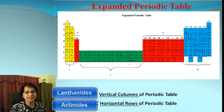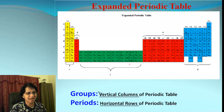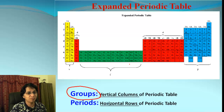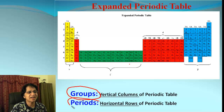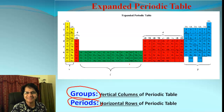And here is how they looked before Seaborg proposed to put those at the bottom. Just to summarize: we have groups, which are the vertical columns in the periodic table, and periods, which are the horizontal rows. I hope you guys enjoyed the video. I'll see you again in the next video. Until then, bye-bye.